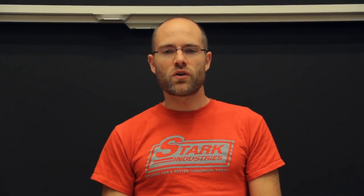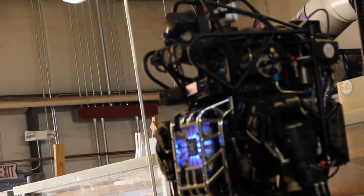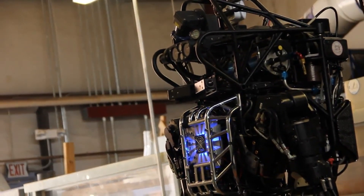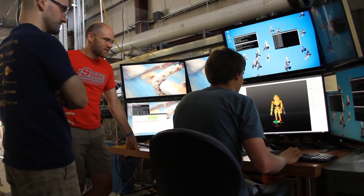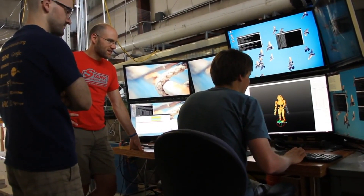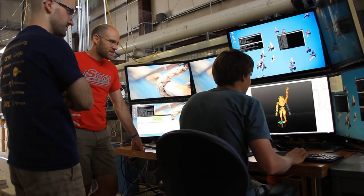Hi, welcome to Underactuated Robotics. Underactuated Robotics is the science of building robots that reason about and exploit their dynamics to make them move more efficiently, more gracefully, more aggressively through the world.